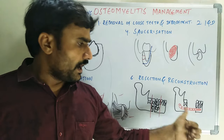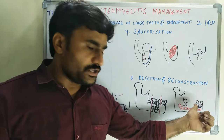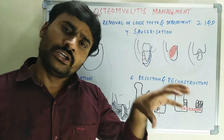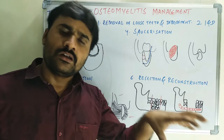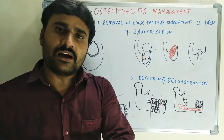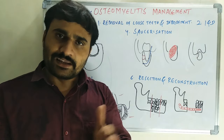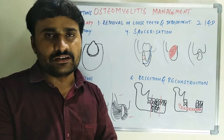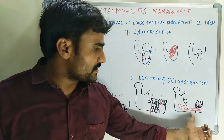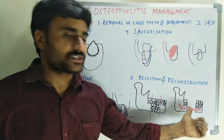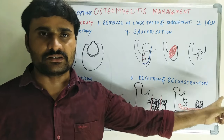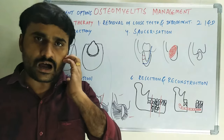Alternatively, bone grafts can be used along with the reconstruction plate, taking bone graft from the iliac crest or another donor site, then attaching the bone graft to the reconstruction plate. This concludes resection and reconstruction and the surgical options overall.